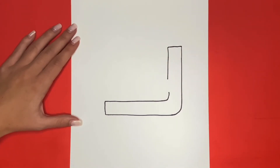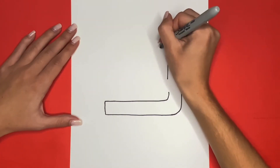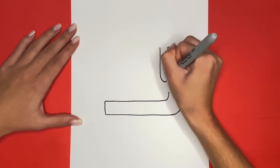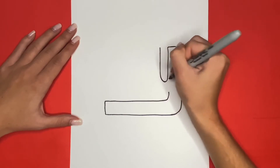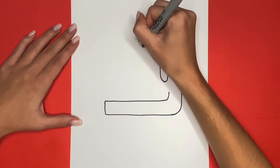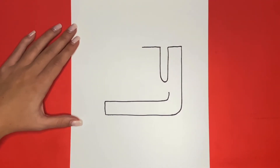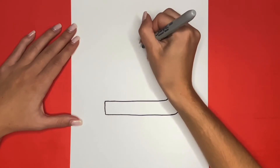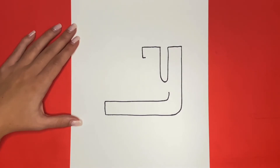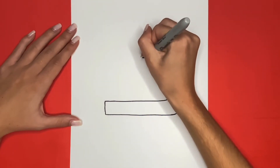Now to the left of all of that, we are going to draw another straight line going up and down that will connect to the bottom with a curved line. At the top of that, we are going to draw a straight line going to the left. Then connecting to that, we are going to draw a small L-like shape. Then from that, we are going to draw a curved line going downwards connecting to right here. This will be the Y for our New York Giants logo.